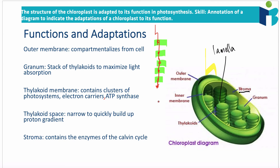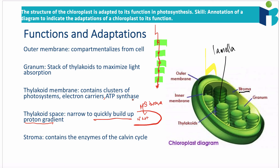We then have the thylakoid space. Outside we have the stroma, and what we're doing is pumping H+ into the thylakoid space during the light-dependent reactions, building up a proton gradient. It's ideal to have as small a thylakoid space as possible — it's a really narrow space — because that quickly builds up the proton gradient. This is similar to how the intermembrane space in mitochondria is also adapted for this function.